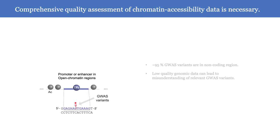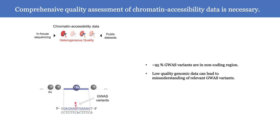One of the major challenges in human genetics is to understand how non-coding mutations affect human traits and disease. Most of these non-coding GWAS variants are thought to be in transcriptional regulatory variants, and chromatin accessibility assays have become a standard method for identifying such regulatory elements. However, there is substantial variation in the data quality, and low-quality data can confound downstream analysis, which can potentially lead to incorrect interpretations.